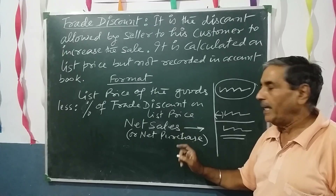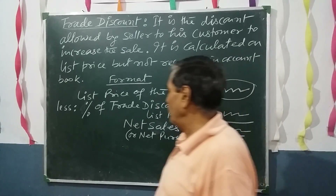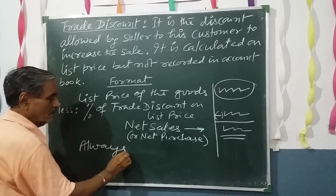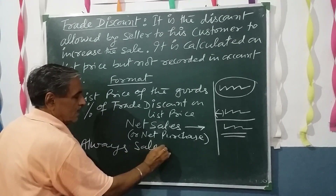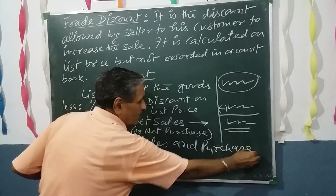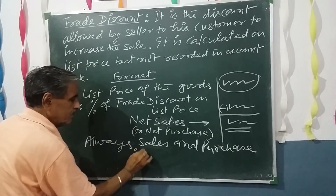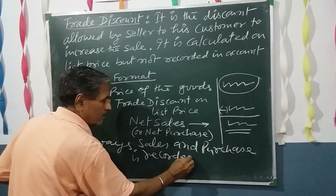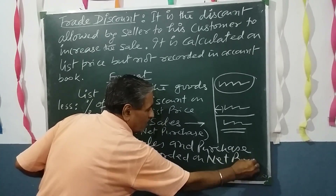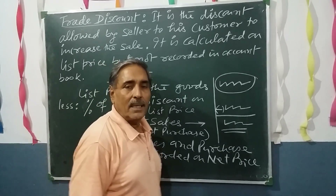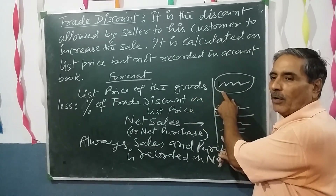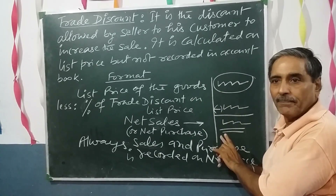Whatever amount comes after subtracting the trade discount will be your net sales or net purchase. Always remember that sales and purchases are recorded at net price. The net price is the price calculated after deducting the trade discount from the list price.